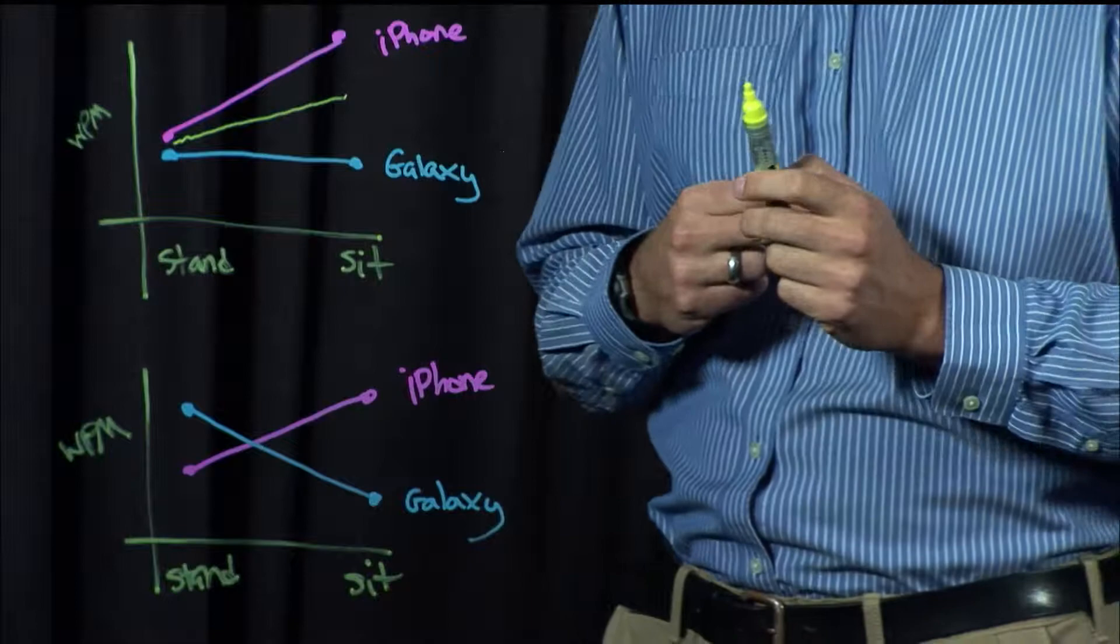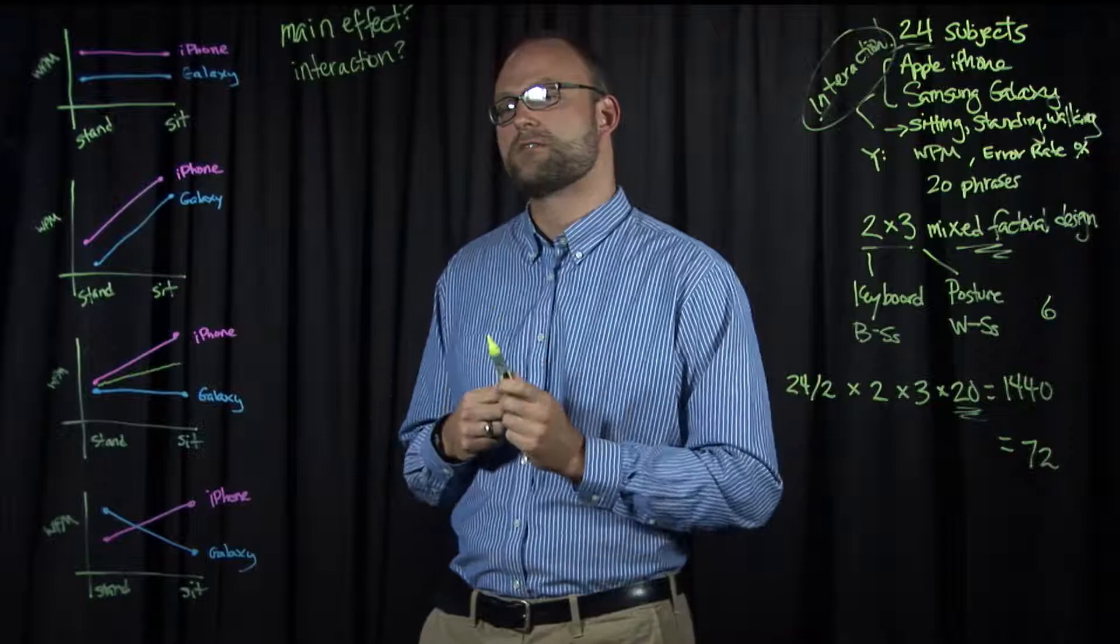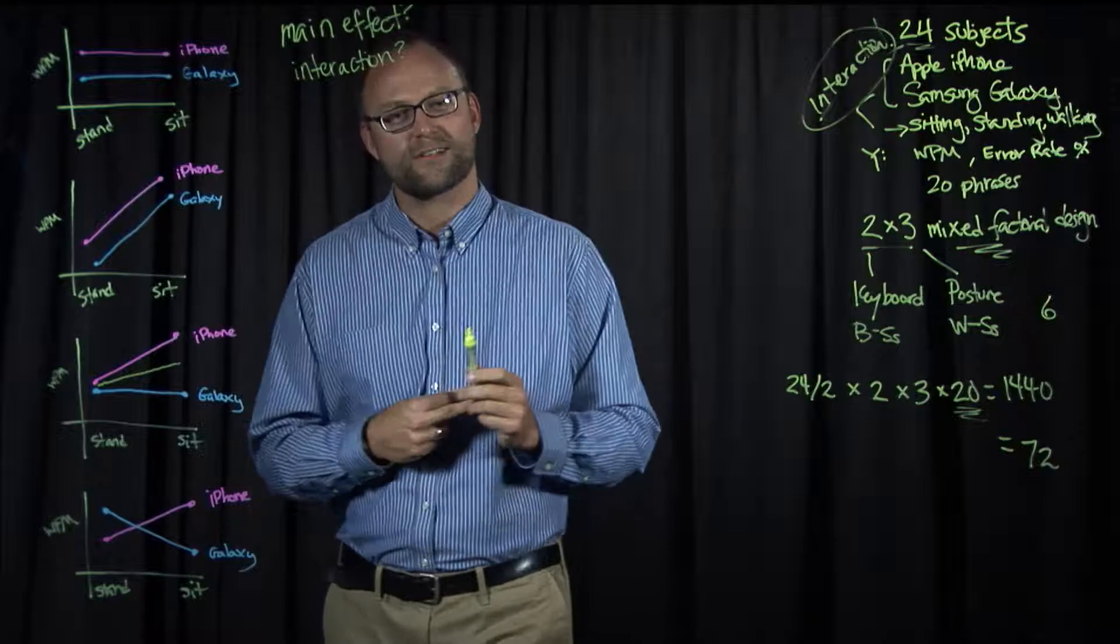But the interesting thing is there's an interaction. Because the lines are not parallel and the iPhone seems to get much better when you sit down and enter text on its keyboard. But the Galaxy kind of stays the same. So posture is differentially affecting the keyboard's performance.